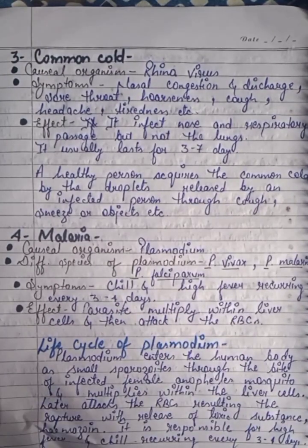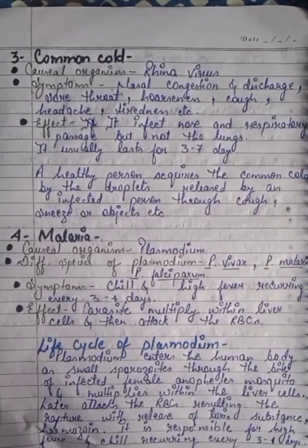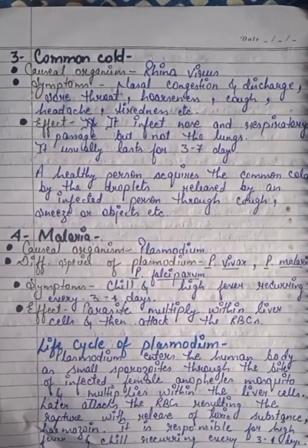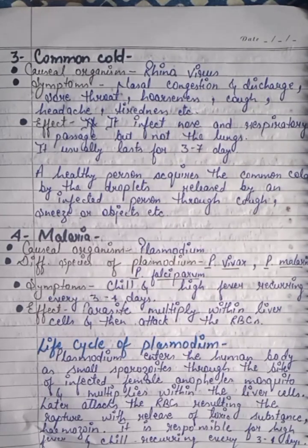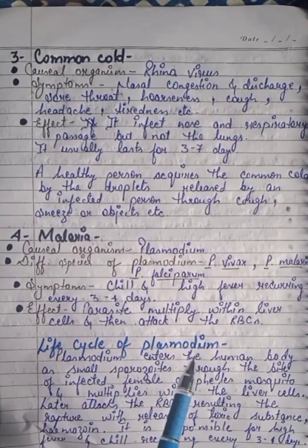A healthy person acquires the common cold from droplets released by an infected person through coughing and sneezing. If an infected person is coughing or sneezing nearby, the virus is released into the air, and if a healthy person inhales it, they will also get the common cold.